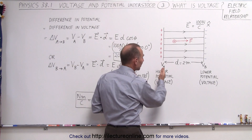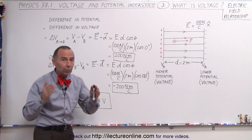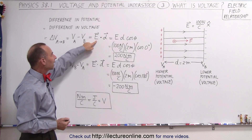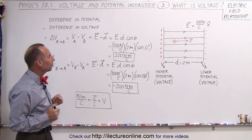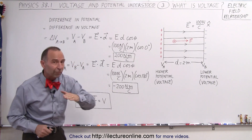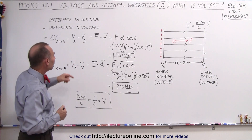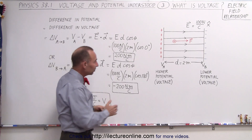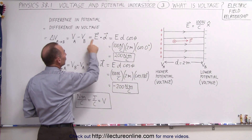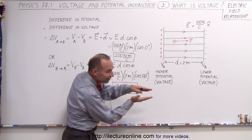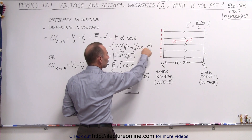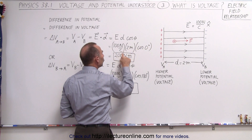Since the voltage at A is a higher potential than the voltage at B, V_A minus V_B gives us a positive quantity. Delta V is also defined as the dot product between the electric field and the displacement — the distance between the two plates — times the cosine of the angle between the direction of the field and the direction of the displacement. Since we go from A to B, and the angle between the electric field direction and the displacement direction is zero degrees, cosine of zero equals one, so 100 times 2 gives us 200 newton meters per coulomb.